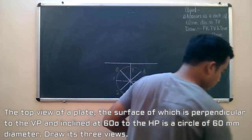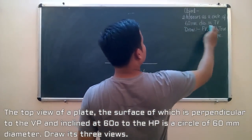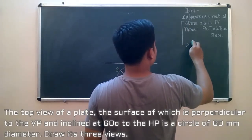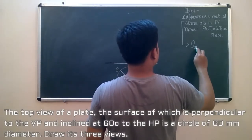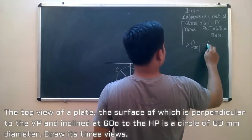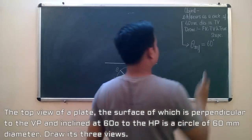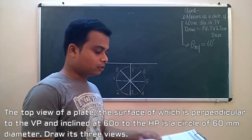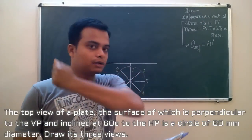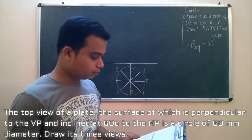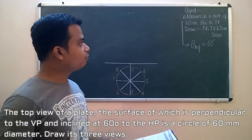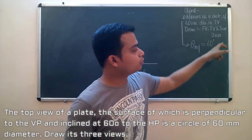This is slightly confusing — it appears as a circle of 60 mm and the surface angle has been given as 60 degrees. So when this surface makes a 60 degree angle, it seems as if from the top it looks like a circle. We have to draw the front view, top view, and true shape of the object.